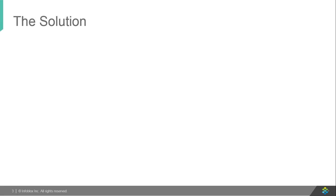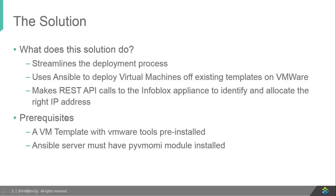Now let's talk about a solution and what it offers. Using Infoblox's integrated Ansible playbook not only streamlines the complete VM deployment process, but also automates IP address assignment and DNS record creation. The Ansible playbook deploys VMs from an existing template on vCenter server. During deployment, it makes multiple REST calls to Infoblox's appliance to allocate an IP address and to create DNS records.